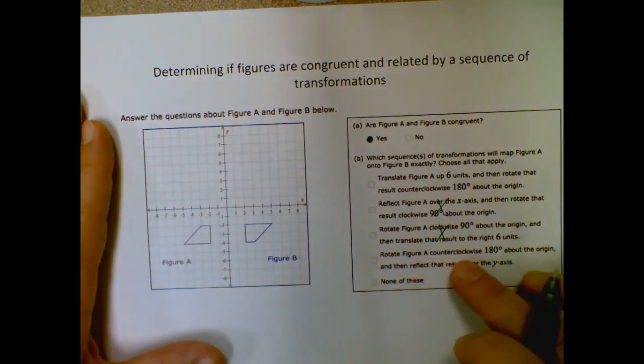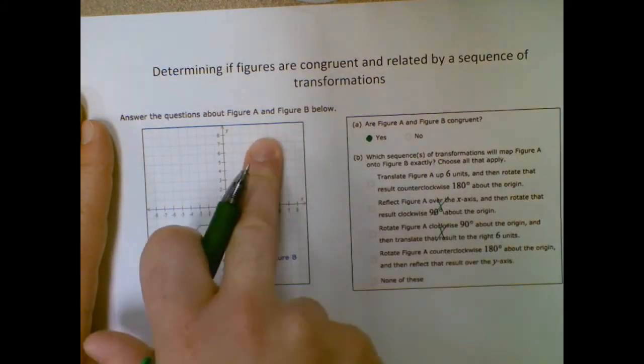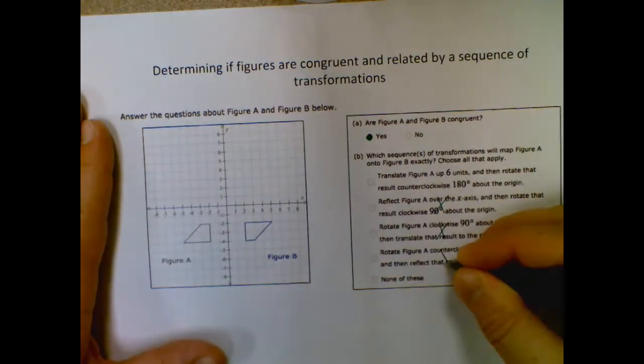And rotate figure A counterclockwise 180 degrees about the origin. So this way. And then reflect over the y-axis. So that would be over here. So that can't work either.